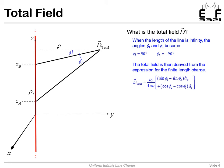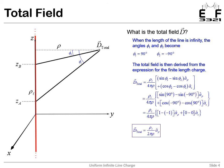So we go back to our equation for the d field for a finite line charge, and we put in those values for phi 1 and phi 2. And we work through the math, and that's the expression that we end up with.